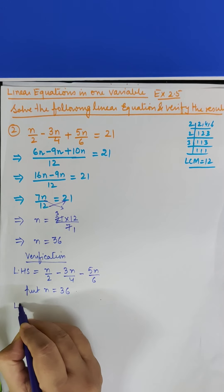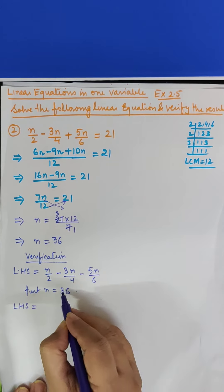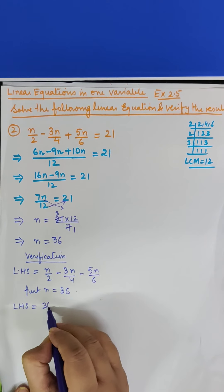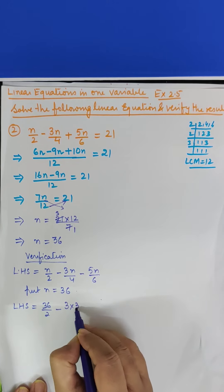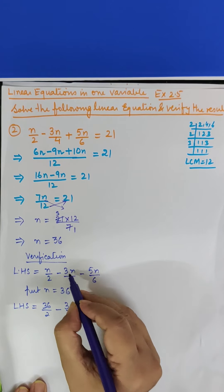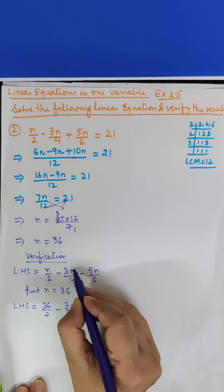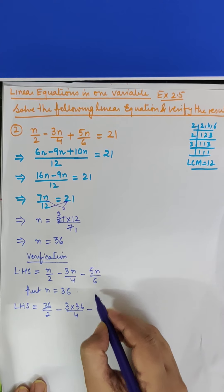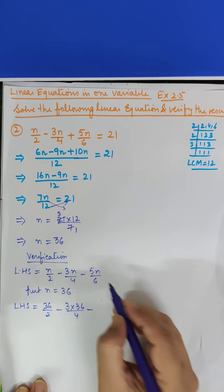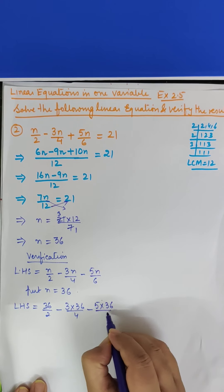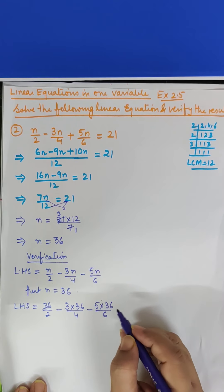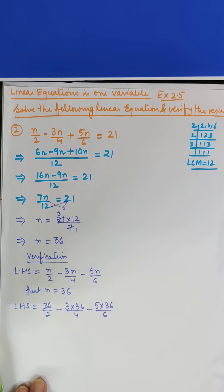So what will LHS become? LHS is equal to 36 upon 2 minus 3 into 36 upon 4, 3 into 36 that will be 36 upon 4, minus 5 into 36 upon 6, 5 into 36 upon 6. Now we will cancel this.